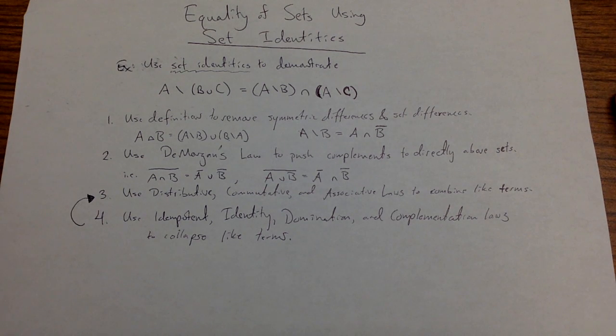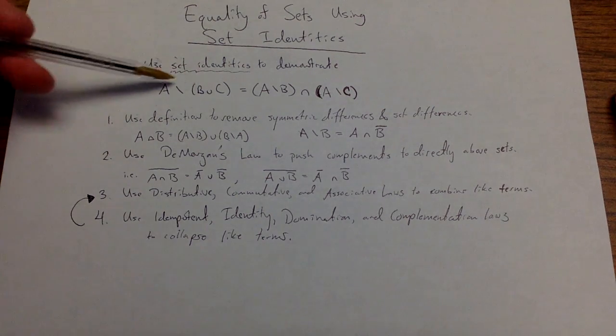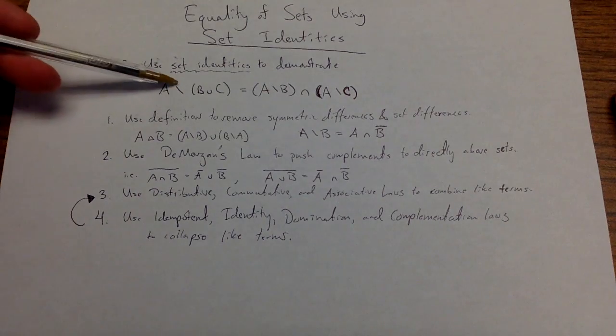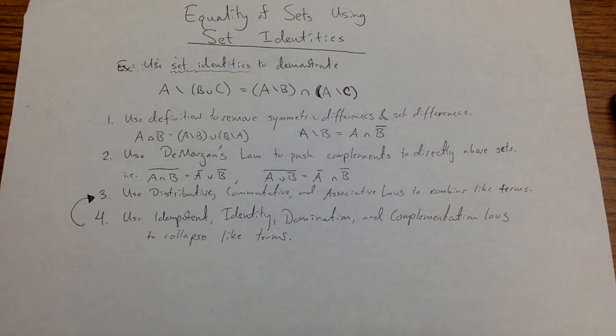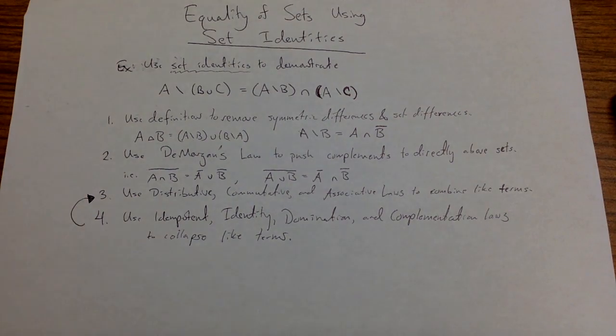However, notice that this will never add back my symmetric differences or set differences. So for instance, in this example, I could start on the left-hand side and follow these steps but I will first remove my set difference, I will never get it back to adding these set differences in. So what I need to do is actually apply this method to both sides and then what I get, I will reverse the proof from the right-hand side once I have a common thing in the middle.